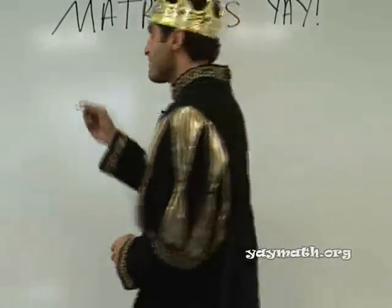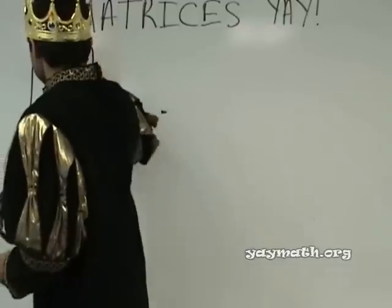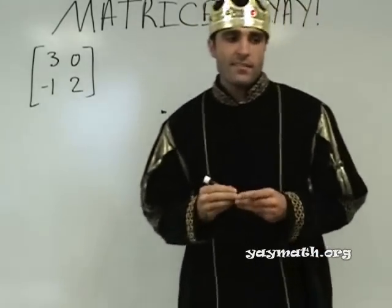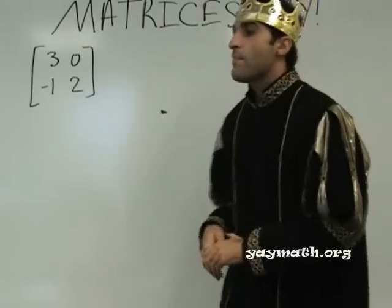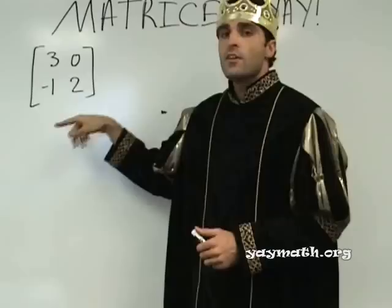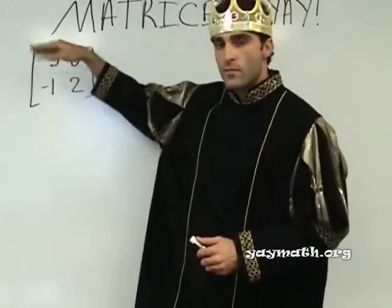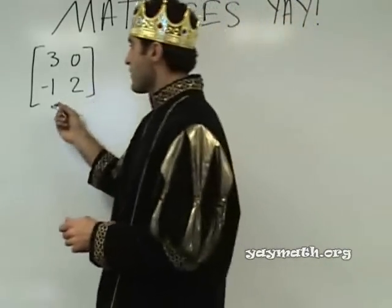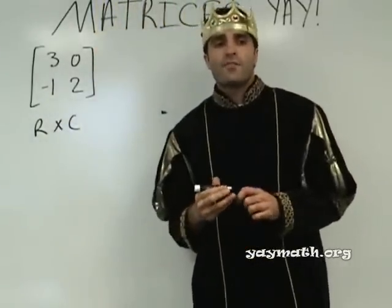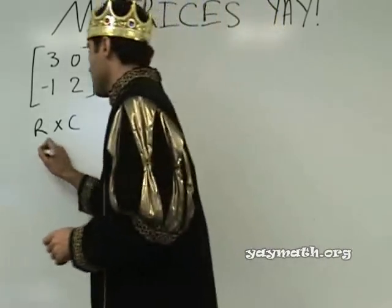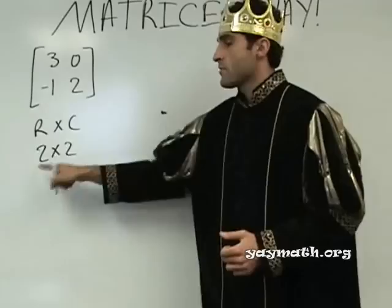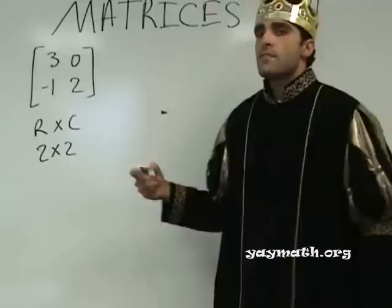Please write the following. This is a matrix — loosely defined as a collection of numbers or data. It's a box of numbers: four numbers here — three, zero, negative one, two. These two are rows, these two are columns. In terms of rows by columns, this is a two by two matrix — two rows, two columns.